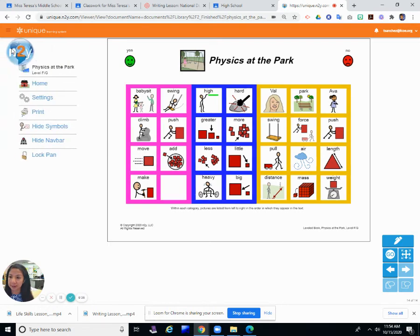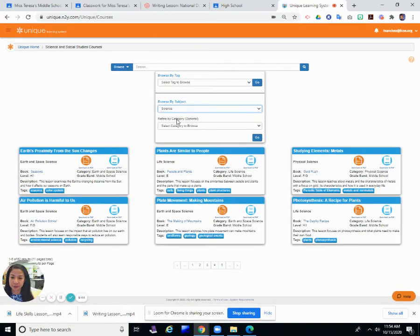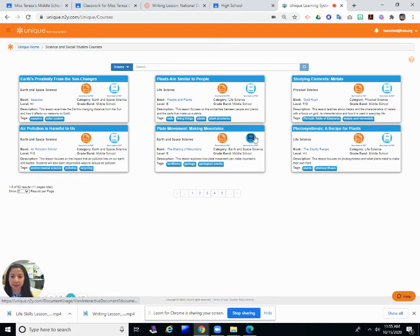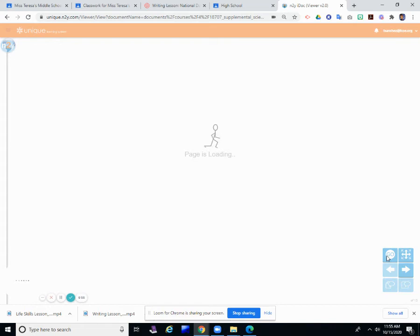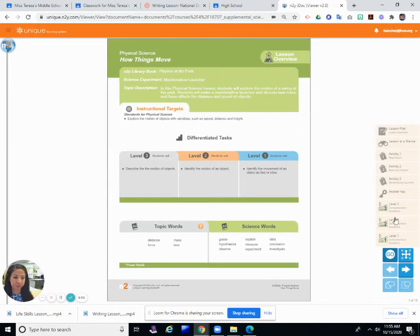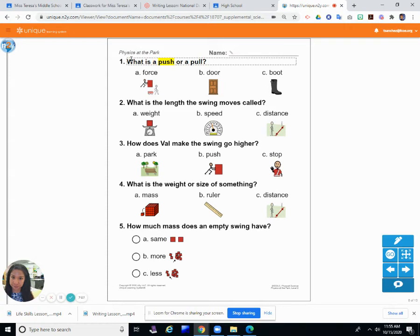So now we go back over to the questions. Physics at the park. So these are our questions. Number one. What is a push or a pull? What do you call a push or a pull? Is that A, a force, B, a door, or C, a boot? Remember what we read about in the story and what we've been talking about all month long? Force. Force is a push or pull. Force.